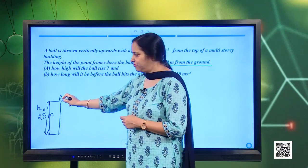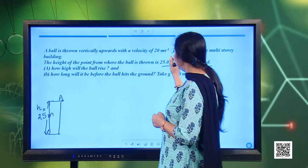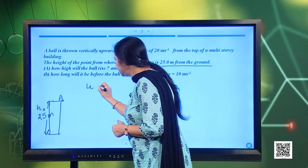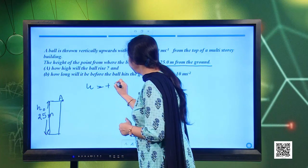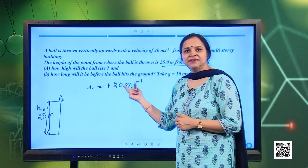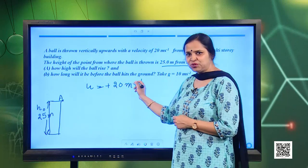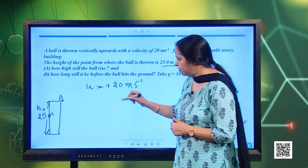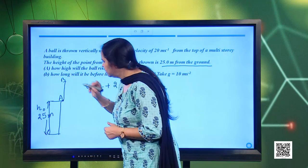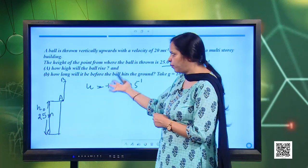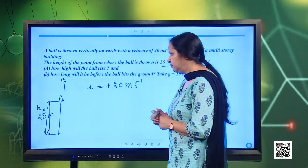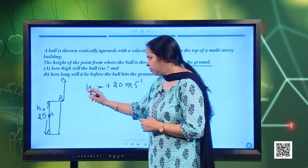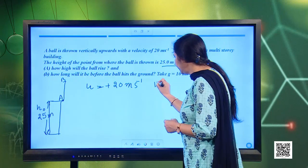The ball is thrown from point A vertically upwards with a velocity of 20 meter per second. So the initial velocity from point A is taken as plus 20 meter per second, since the upward direction is positive. We need to find how high the ball will rise. We consider it reaches point B. When the ball reaches the highest point B, its final velocity will be 0. To find the height, we use the third equation of motion: V² = U² + 2AS.